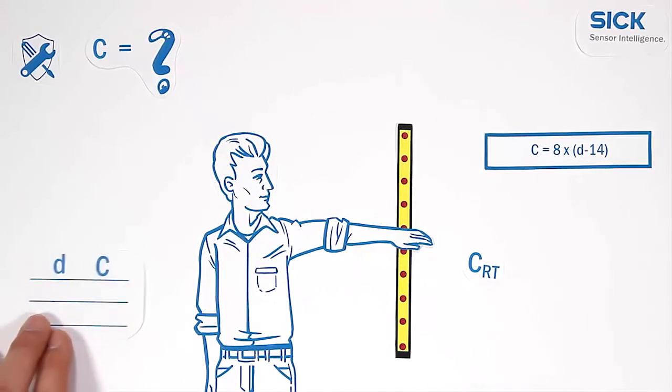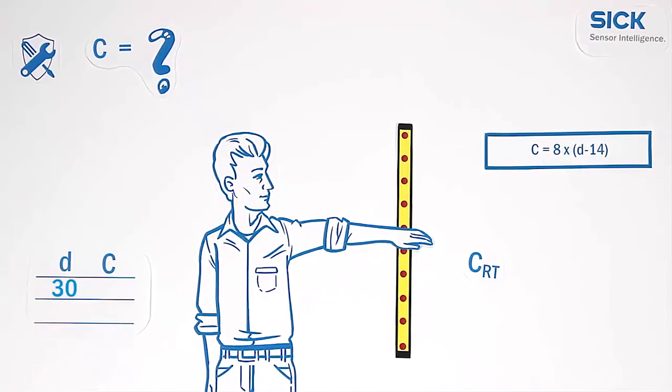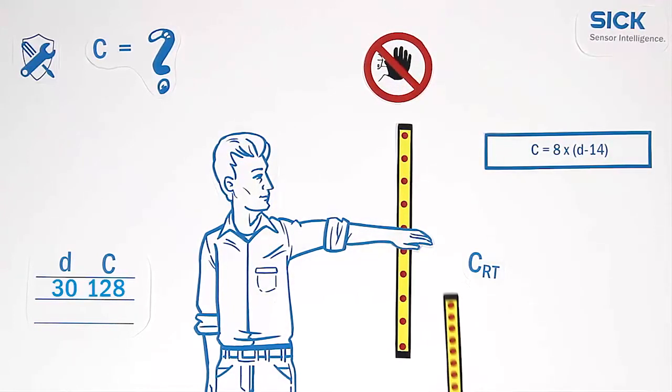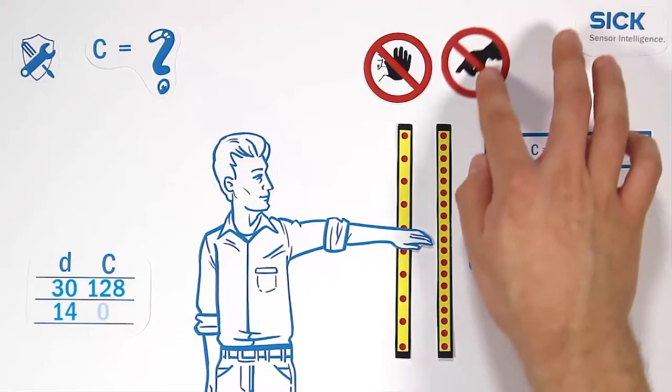In the case of a 30 mm resolution, we receive a value C of 128 mm ensuring hand detection. With the finger protection resolution of 14 mm, C becomes zero.